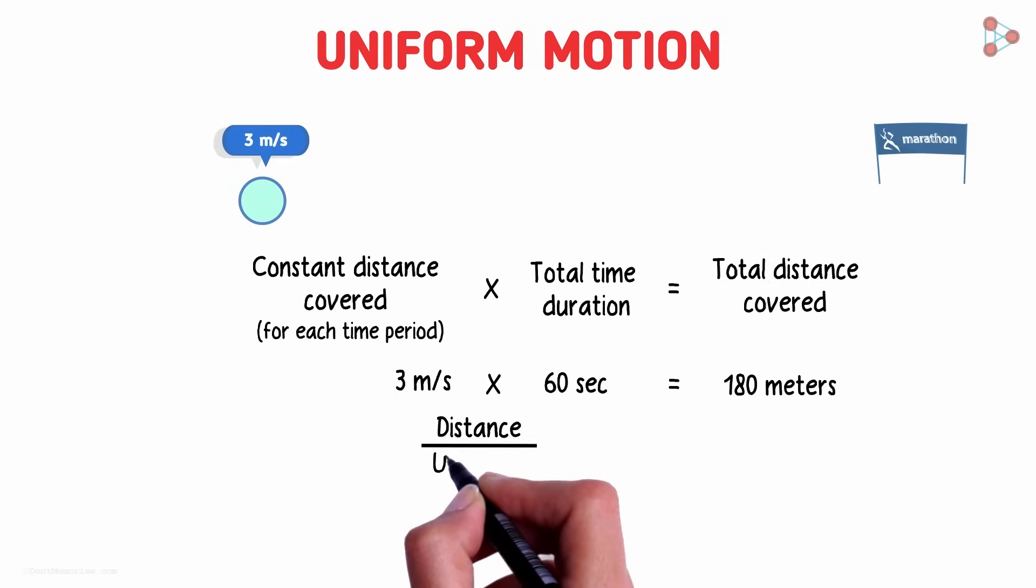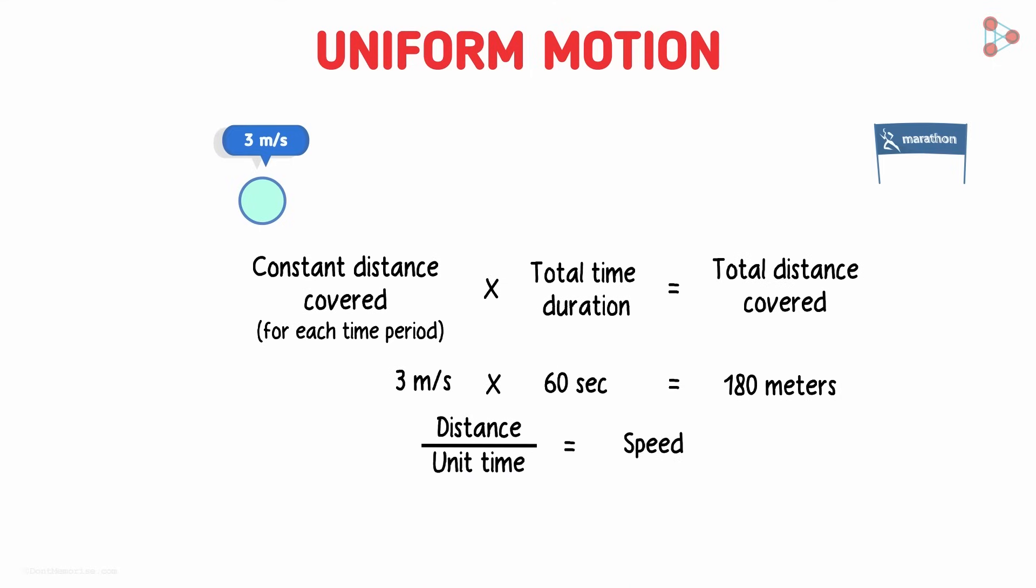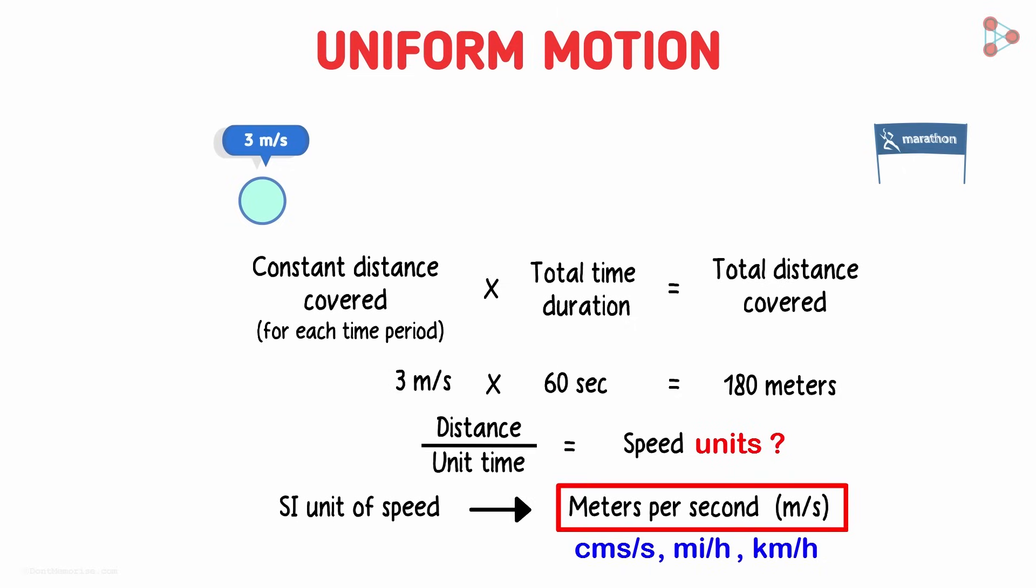Distance travelled by an object in unit time is called speed. It's distance per unit time. So what will be the units? The SI unit of speed is meters per second. Quite often you will also see speed denoted in centimeters per second, miles per hour or kilometers per hour, but the standard unit remains meters per second.